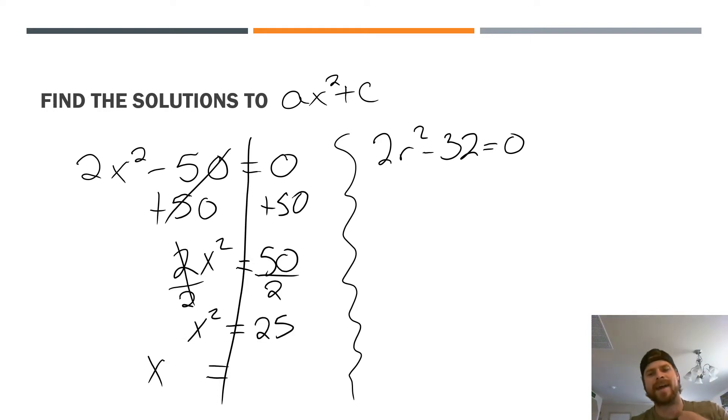You're always going to save that exponent of 2 or whatever the exponent may be. You'll always save that to be the last and final step that you're going to inverse operate with. Now I need to remove the exponent of 2, so I need to do the opposite of squaring something. The opposite of squaring something is square rooting it.